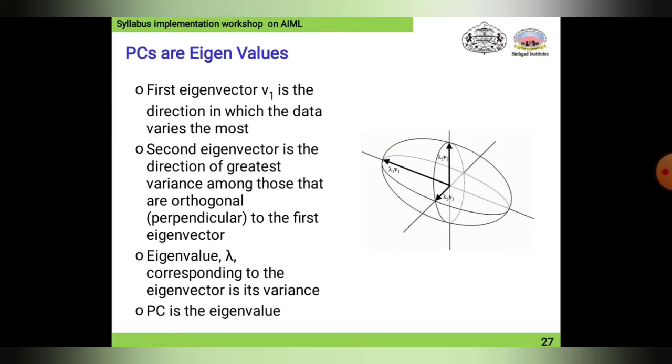The second eigenvector is the direction of greatest variance among those that are orthogonal or perpendicular to the first eigenvector. The eigenvalue lambda corresponds to the eigenvector as its variance. So PCs are eigenvalues, and this is how we correlate with lambda.